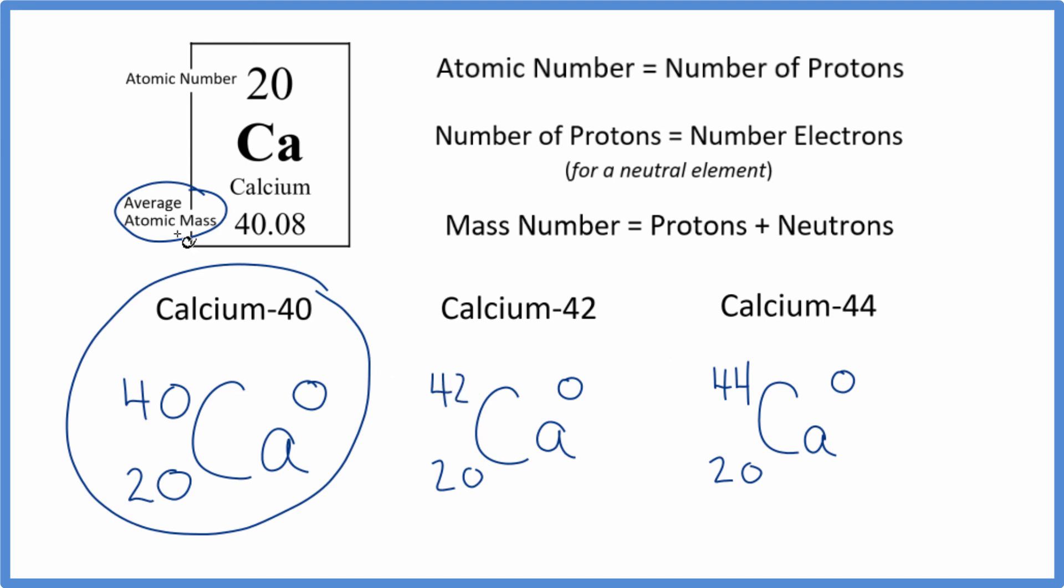The average atomic mass here is 40.08. It's very close to 40. That means that this calcium-40 isotope will be the most common isotope of calcium.